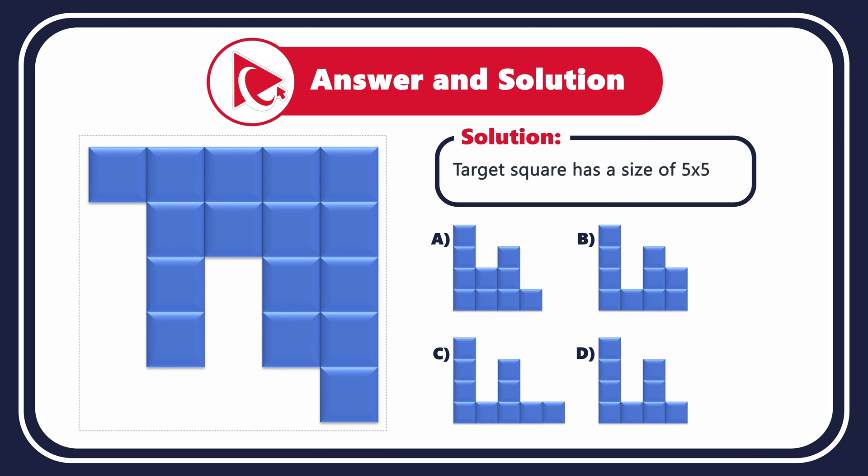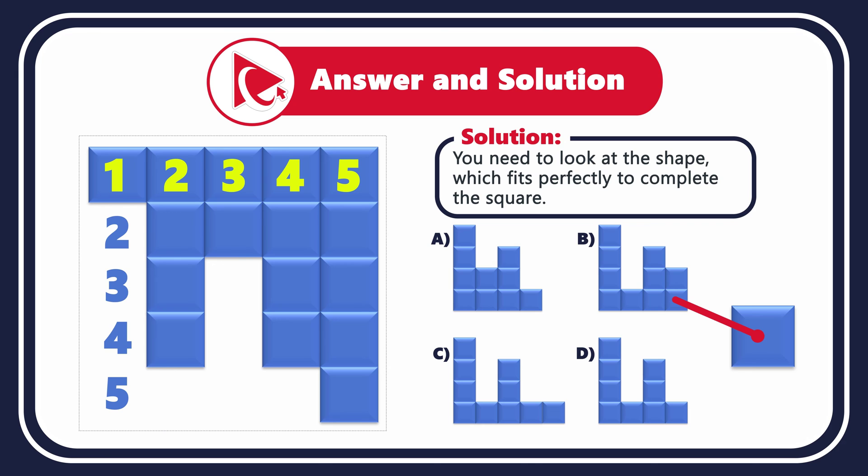Let's first confirm what we're dealing with here. We have a target square which will have a size of 5 by 5. The target square consists of small squares, and some of the small squares at the bottom part of the large square are missing. Our goal is to find the shape which fits perfectly to complete the large square.